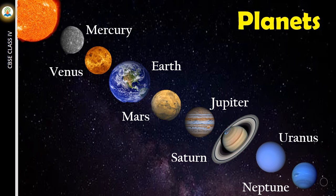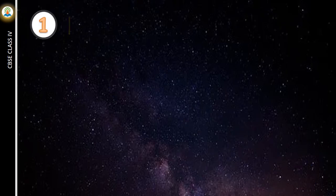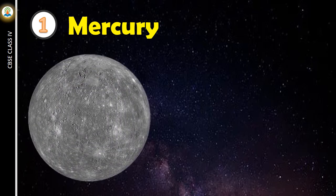Let us learn about eight planets in detail. Mercury is the first planet in the solar system. It is the smallest and closest planet to the sun.